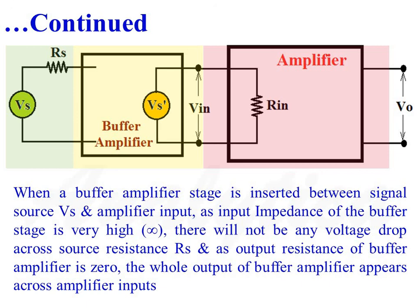So in this way, by inserting a buffer stage between the input signal and the amplifier input, we can overcome the problem of voltage drop across the source resistance RS. For a buffer amplifier, input impedance is infinite and output impedance is zero.